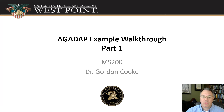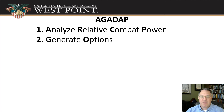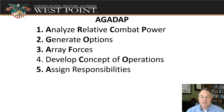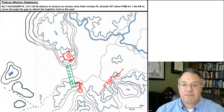In this video I want to walk you through AGADAP and talk you through a thought process on how I could create something and give you an example. We're working through AGADAP — this is how we do our course of action development. It's just a mnemonic to help us remember all the steps: analyzing relative combat power, generating our options, arraying our forces, developing a concept of operations, assigning responsibilities, and producing a concept statement and sketch.